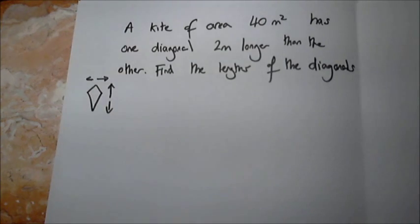This question asks us about a kite. It says a kite of area 40 meters squared has one diagonal two meters longer than the other. Find the lengths of the diagonals.